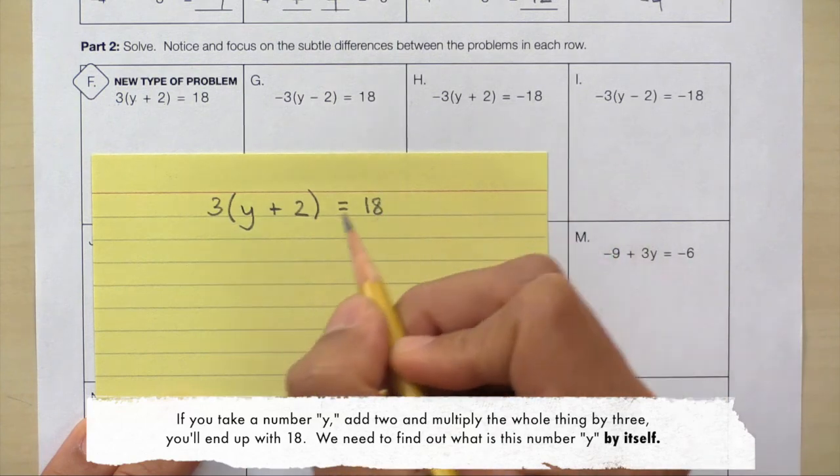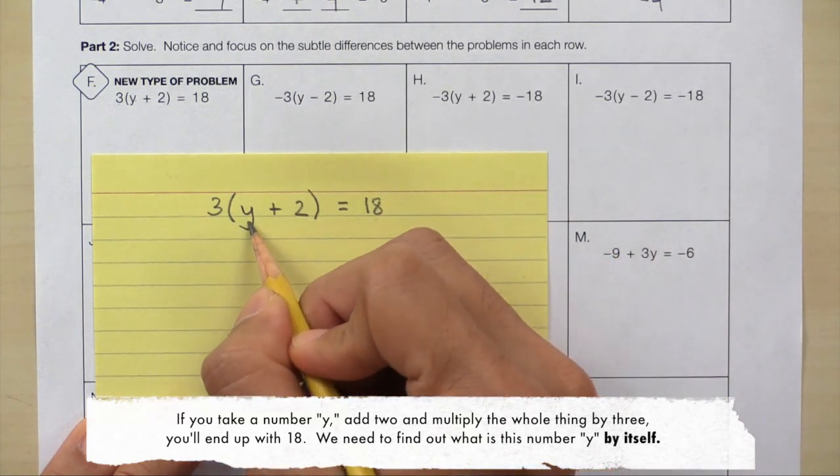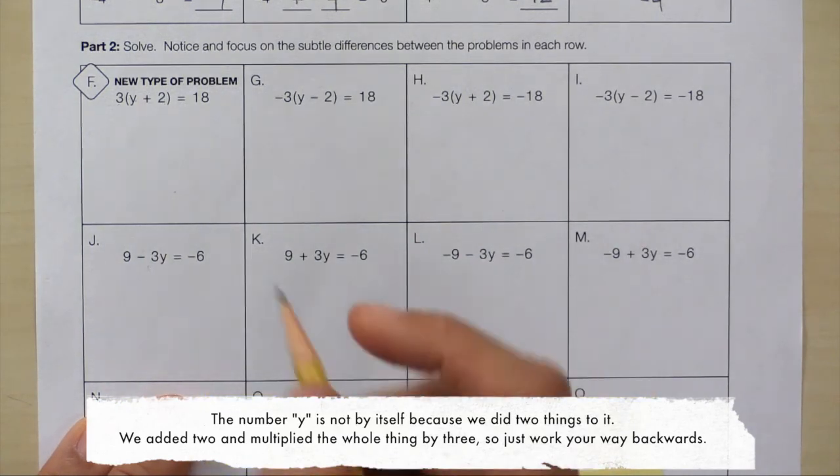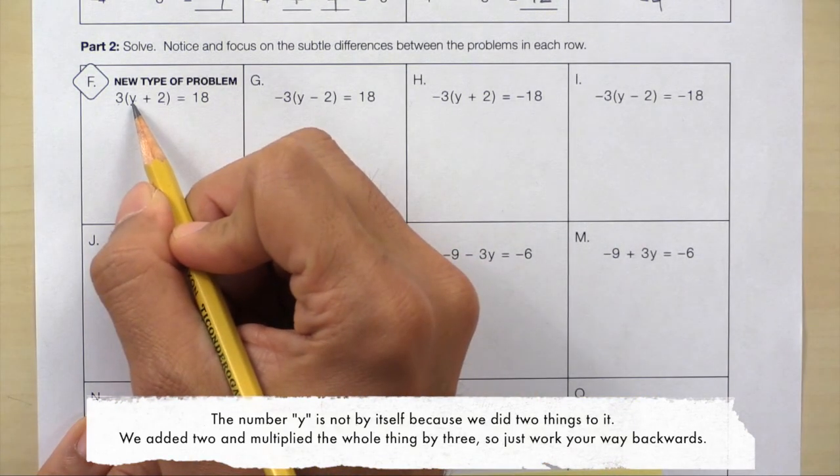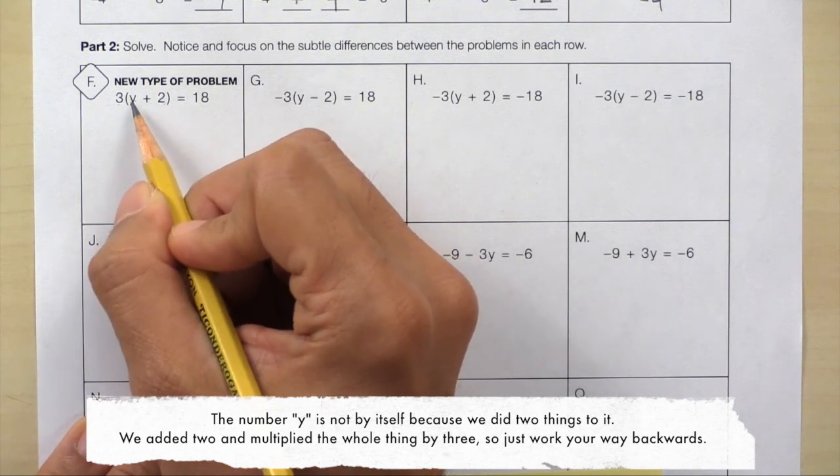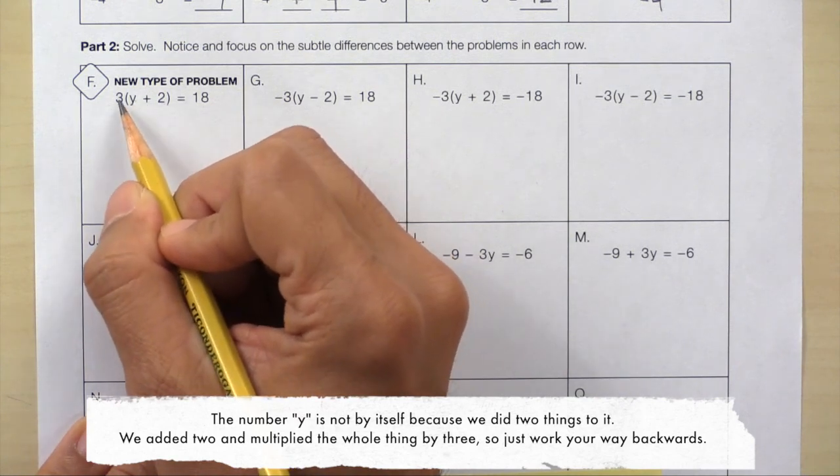We need to figure out what this number y is by itself. Right now, this number y is not by itself because we did two things to it. We added 2, then we multiplied this whole thing by 3. So just work your way backwards.